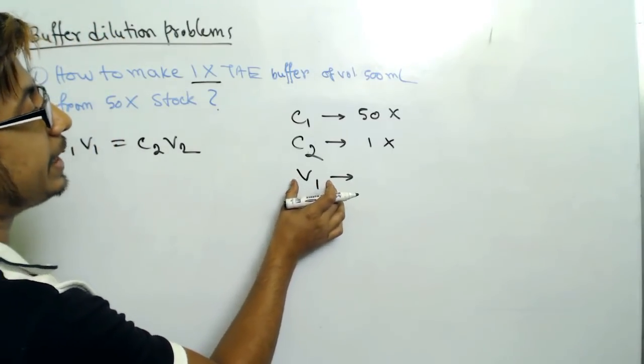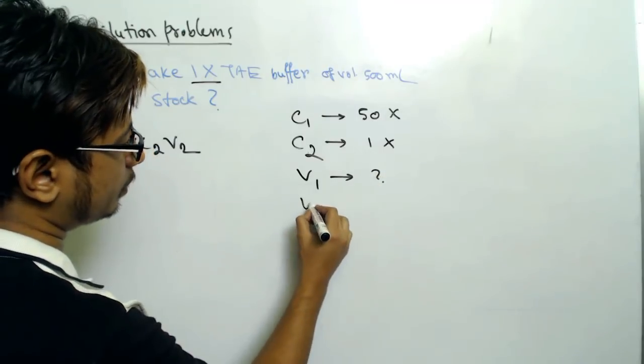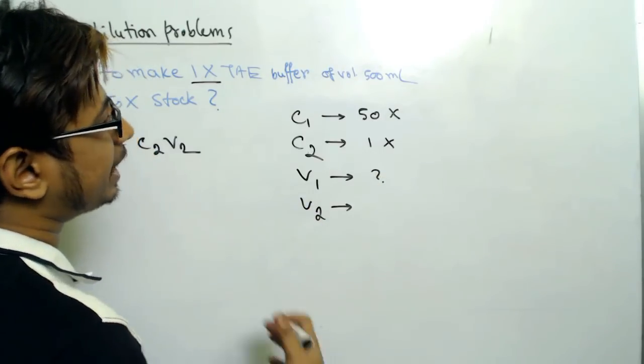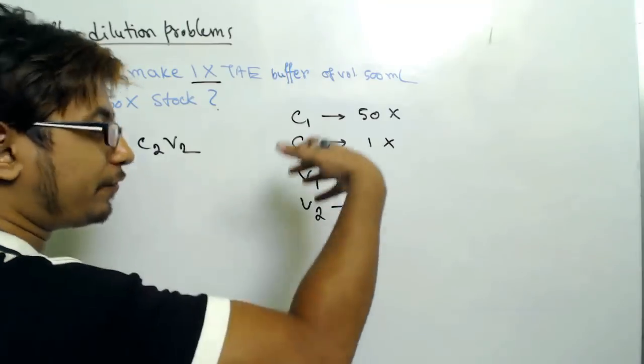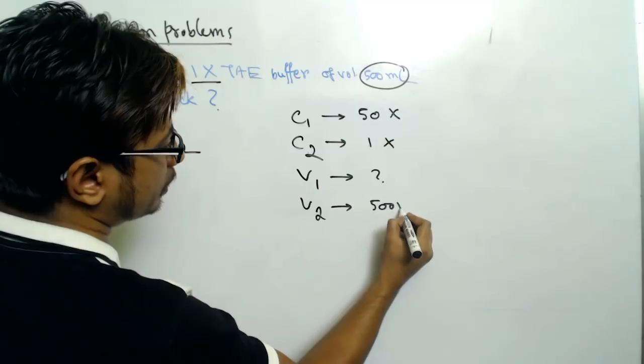What about V1? V1 is the amount of volume that we take from the stock. That we don't know - we need to calculate this one out. And V2 is the ultimate total volume after we dilute the stock. That is 500 milliliters, which is also mentioned here.